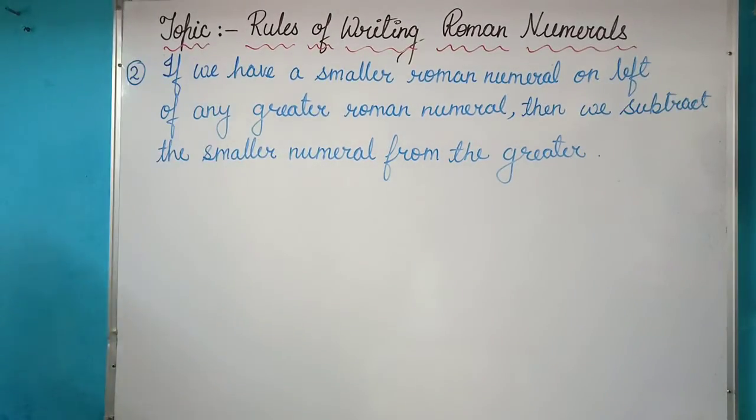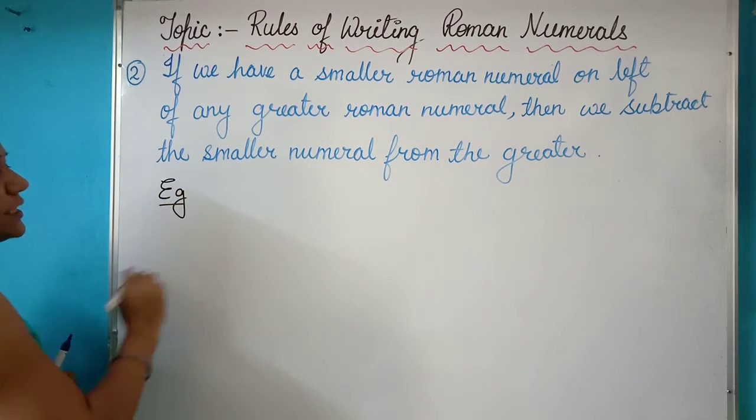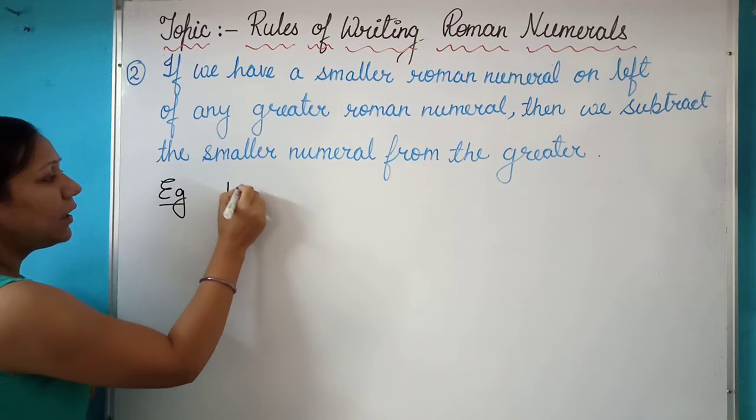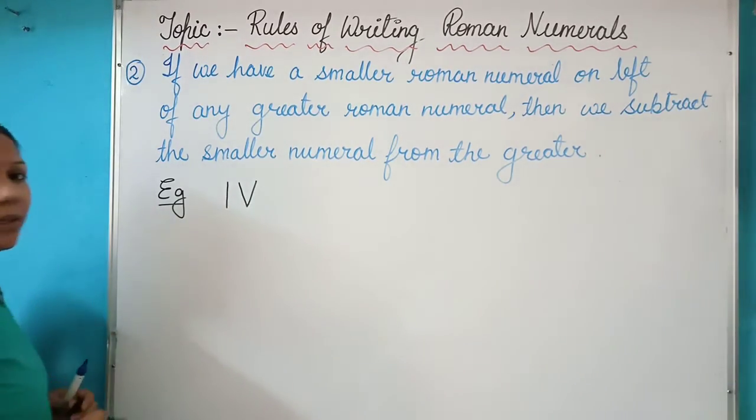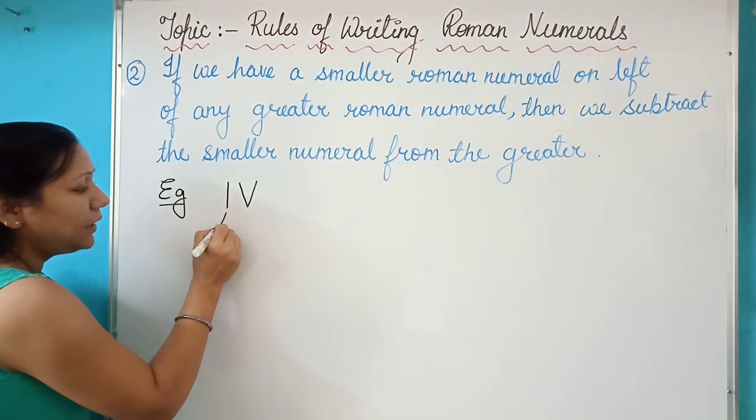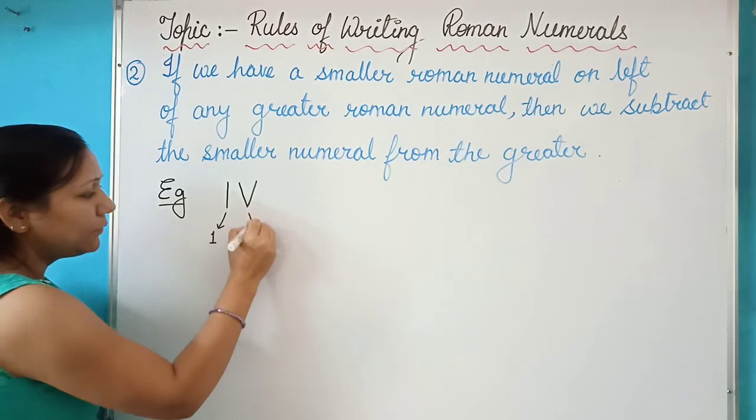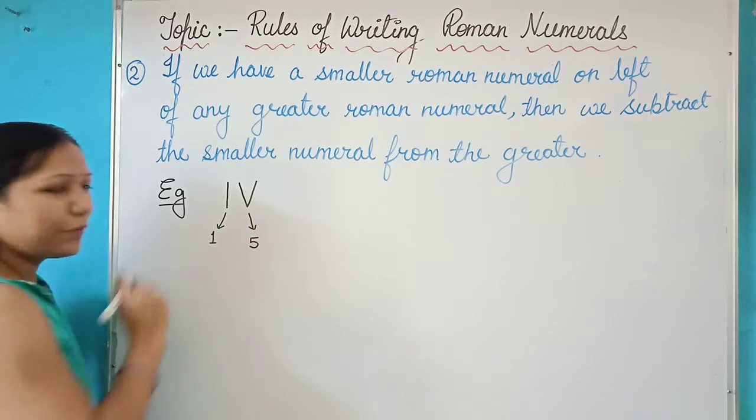Now for explaining this topic, let me take an example. Suppose if it is written IV. Now here, I basically represents digit 1 and V represents 5.